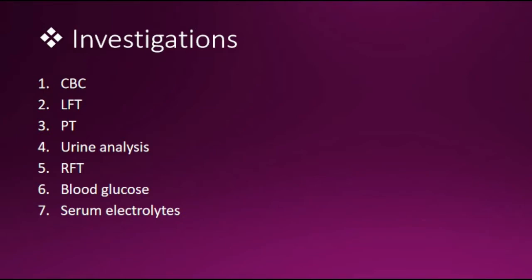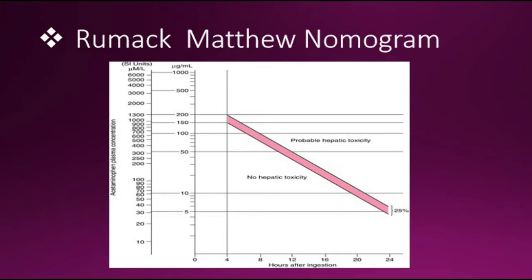Investigations: the patient's history of taking paracetamol is important. Blood paracetamol level can be obtained. Laboratory tests include CBC (complete blood count), liver function test which shows increased AST, ALT, and bilirubin, prothrombin time which will be prolonged, urine analysis, renal function test, blood glucose, and serum electrolytes. There is another method called the Rumack-Matthew nomogram, which estimates the risk of toxicity based on serum concentration of paracetamol at a given number of hours after ingestion. The first 4 hours after ingestion may show a lower concentration because paracetamol may still be in the process of being absorbed in the GI system, so serum level is taken after 4 hours.